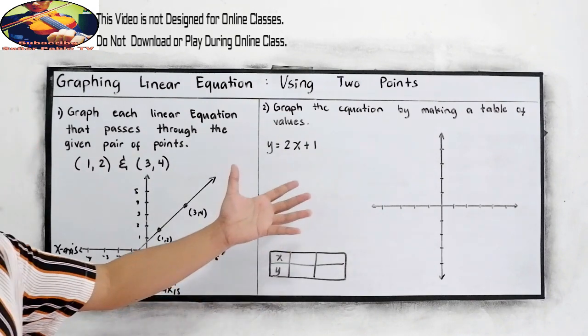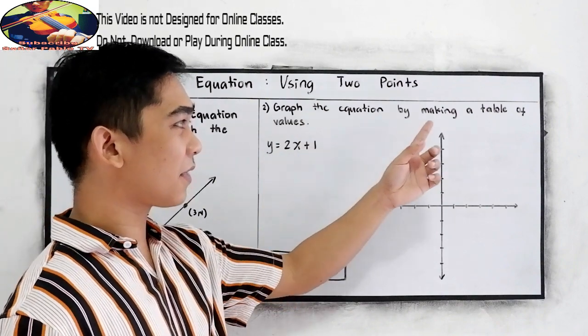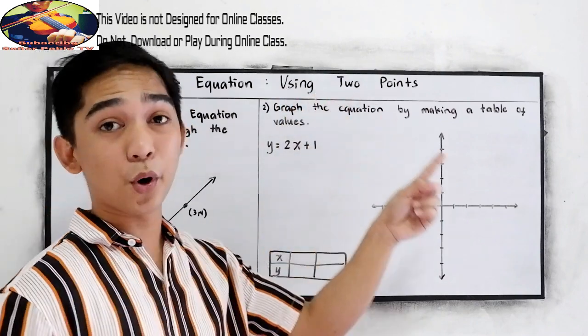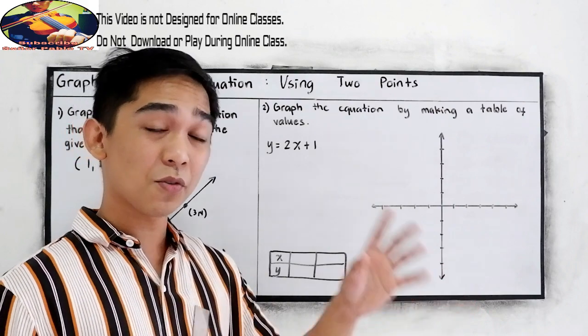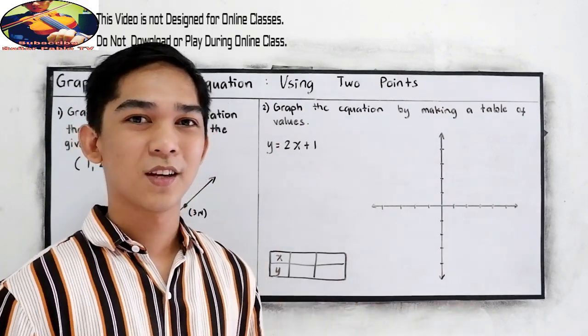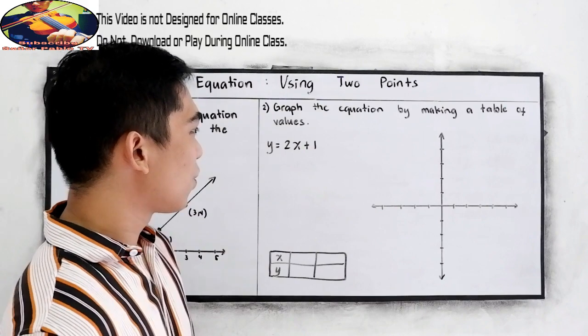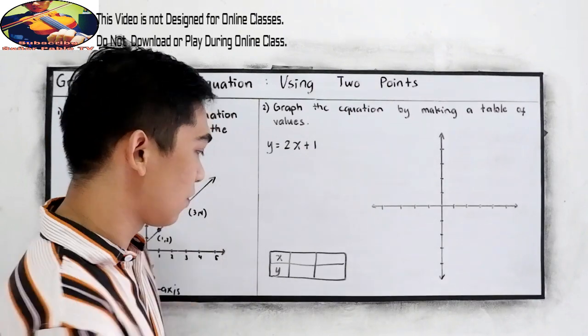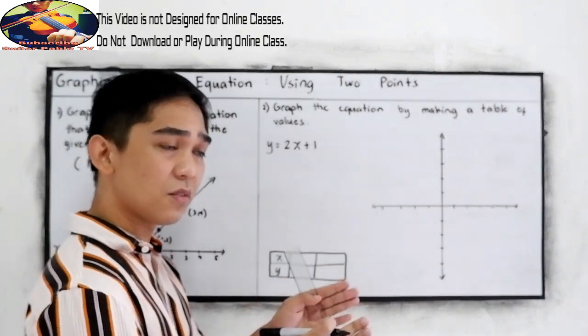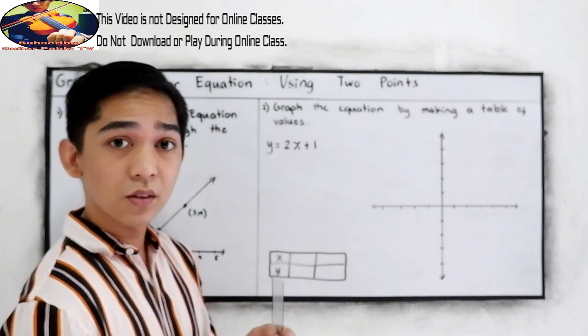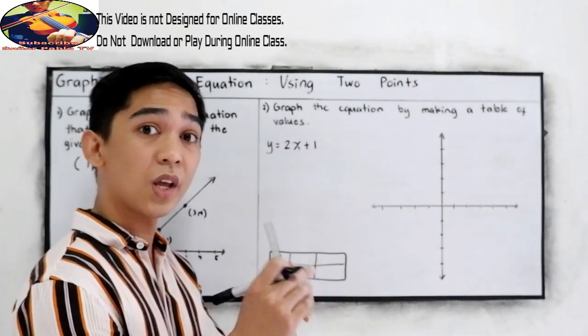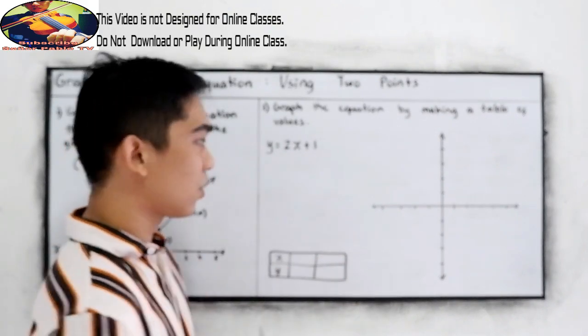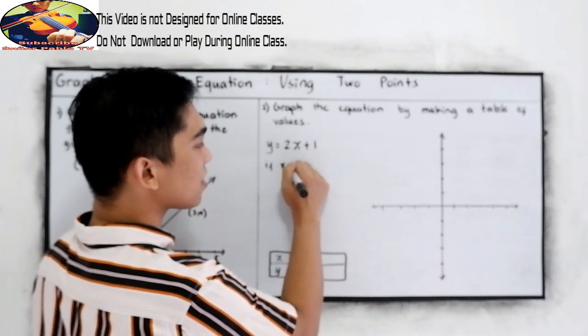And now, let us try this. Let's graph the equation by making a table of values. Since we're in our topic using two points, we're going to use the table of values to find our points. We're going to set a value for x. So for x, let's say it can be positive 1 or positive 2, 0, 1. If you want negative numbers, so negative 2, negative 1, or negative 1, 0, that's okay.